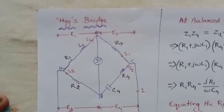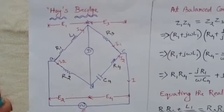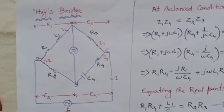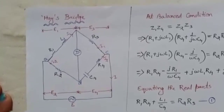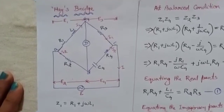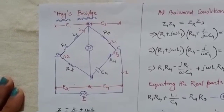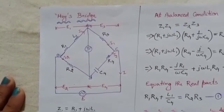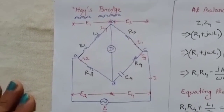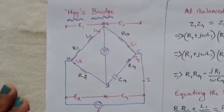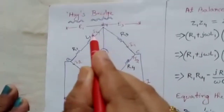Hello everyone. Today we will discuss Hayes bridge. Like Maxwell's bridge, this bridge is also used for measurement of unknown inductance. In the case of Maxwell's bridge, we measure unknown inductance with low or medium Q factor values. But if we use Hayes bridge, we can measure high Q coil values.